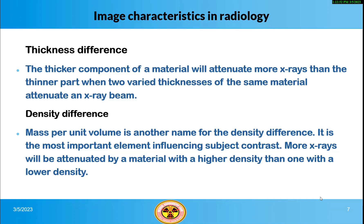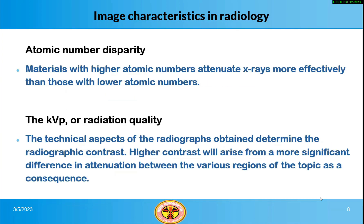Density difference, also known as mass per unit volume, is the most important element influencing subject contrast. More x-rays will be attenuated by a material with a higher density than one with a lower density. Materials with higher atomic numbers attenuate x-rays more effectively than those with lower atomic numbers. The technical aspects of the radiographs obtained determine the radiographic contrast, and higher contrast will arise from a more significant difference in attenuation between the various regions.